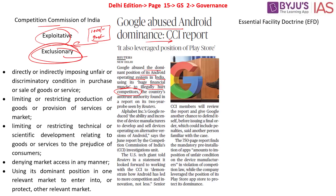It can also include the exclusionary principle. For example, consider the App Store of Apple or Play Store of Google. If a company does not want a developer to host a program on that Play Store or App Store, that is the exclusionary principle — denial of market access — meaning competition is not happening in the market. On one side we have the exploitative principle with discriminatory pricing; on the other, the exclusionary principle with denial of market access.